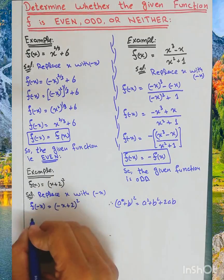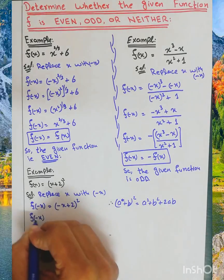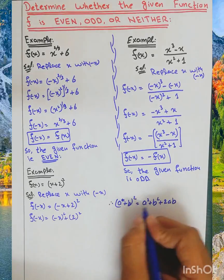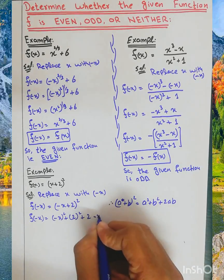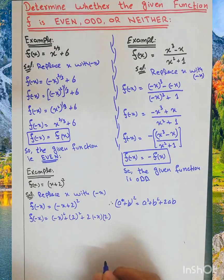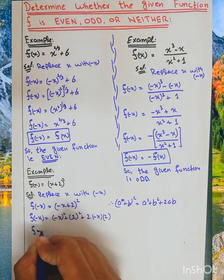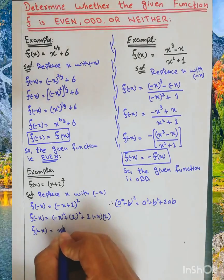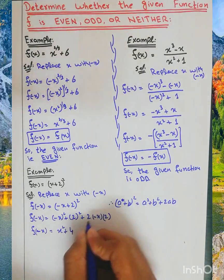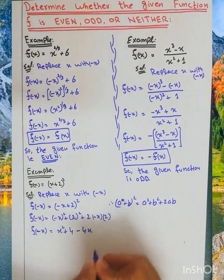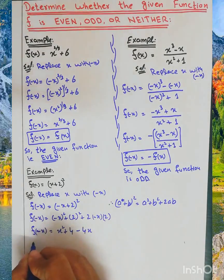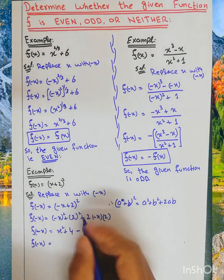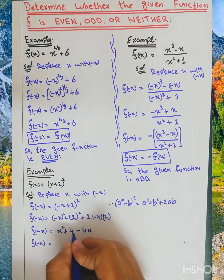Expanding, f of minus x is equal to x squared plus 4 minus 4x. So f of minus x equals x squared plus 4 minus 4x.